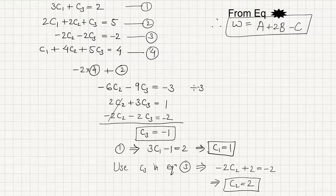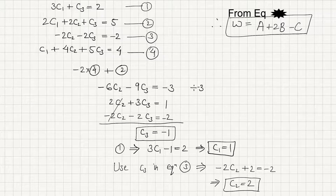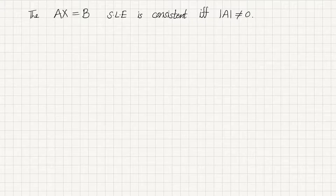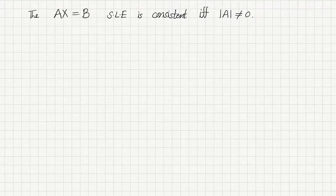Now we will see with an example whether a set of vectors in R3 spans the whole vector space. First, a useful result about systems of linear equations: if you have a system ax = b, this system is consistent if and only if the determinant of the coefficient matrix is non-zero. Consistent means the system has a solution. We have already discussed how to find the determinant of a matrix in previous videos.